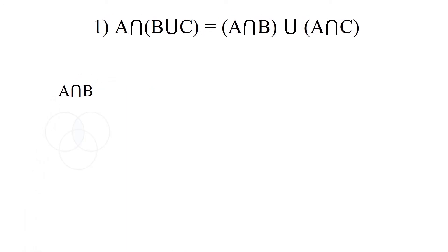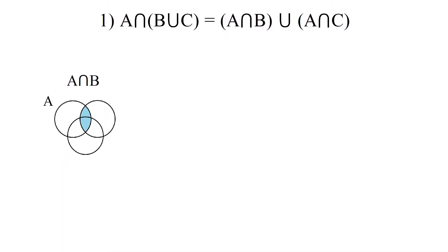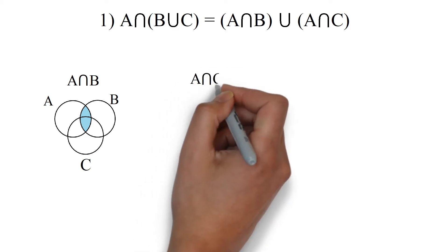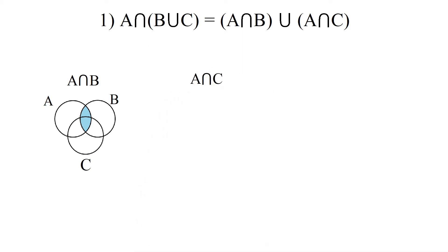Let us prove it by Venn diagram. In the first diagram I have represented A intersection B, which is shaded blue in color — the portion common to both A and B. Similarly I have represented A intersection C, the portion common to both A and C.